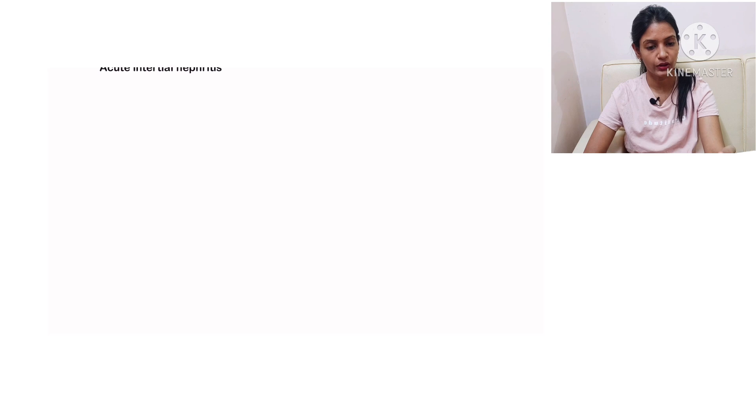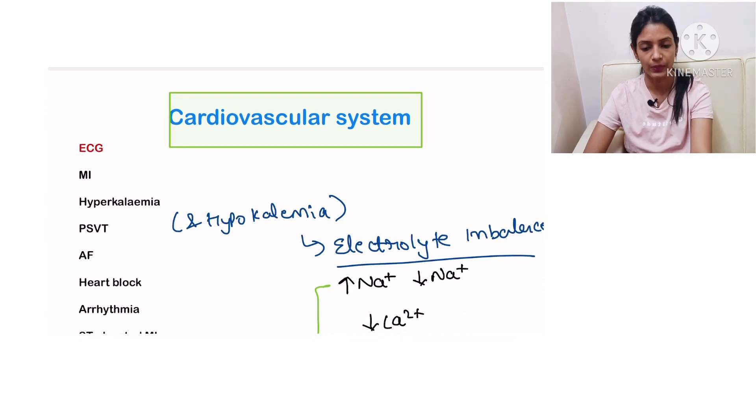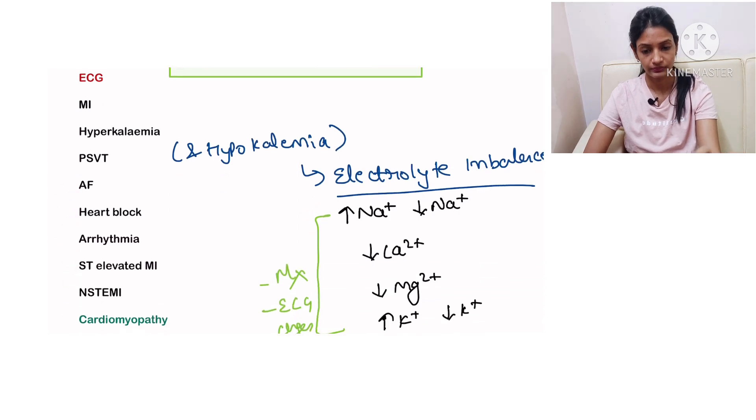Let's move on to the cardiovascular system. In cardiovascular system you should be knowing the ECG of MI, hyperkalemia, PSVT, AF, heart block, arrhythmia, ST elevated MI and non-ST elevated MI. You must be knowing the ECG of them by heart.